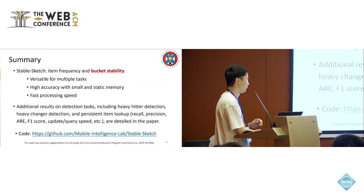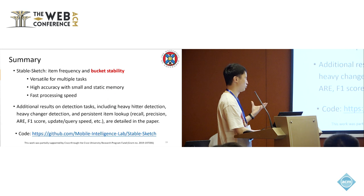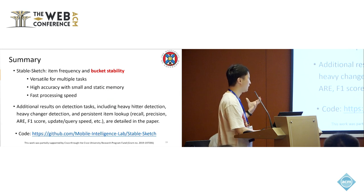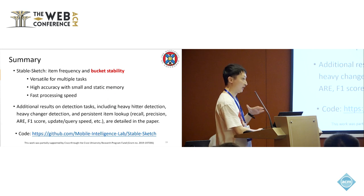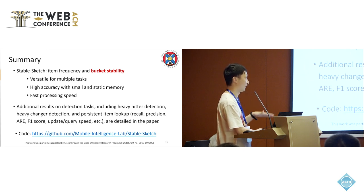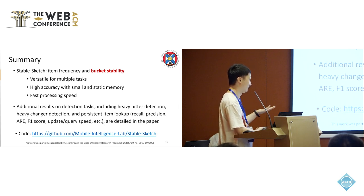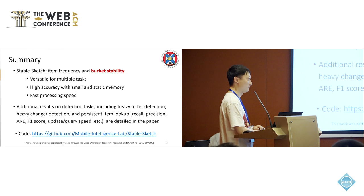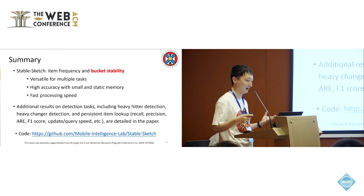To wrap it up: this paper introduced Stable Sketch, which records item frequency and uses a new metric called bucket stability. It is versatile for different tasks, achieves high accuracy even with small memory, and achieves fast processing speed. We also have extensive evaluation results including heavy hitter detection, heavy changer, and persistent item detection on different metrics including recall, precision, F1, update speed, query speed, and even a P4 implementation. Details can be found in the paper, and you can try Stable Sketch by accessing the provided link. Thanks to Cisco for their support, and thanks to TheWebConf for awarding the best student paper award.